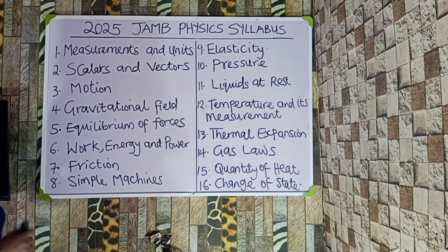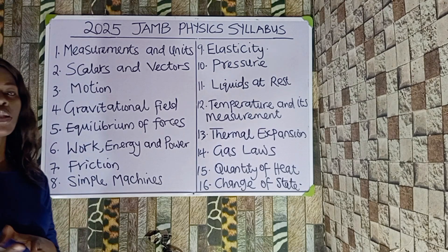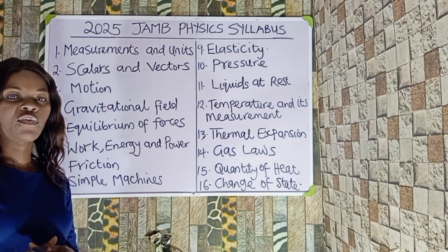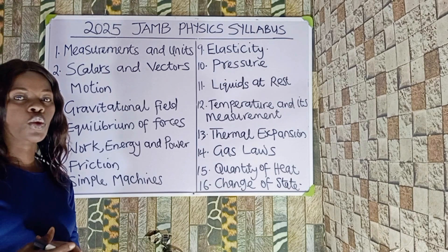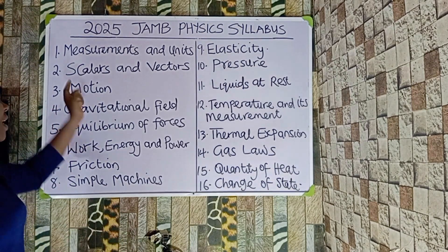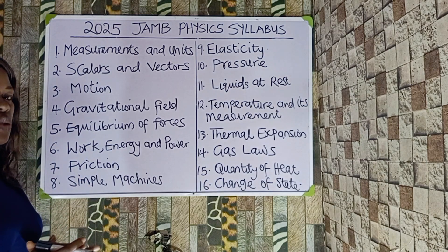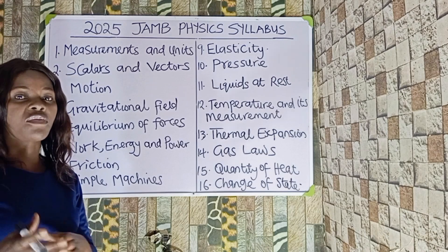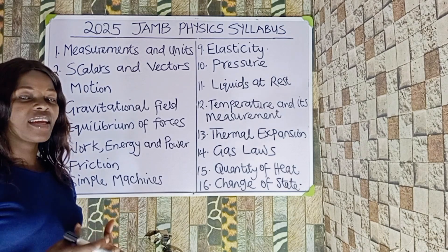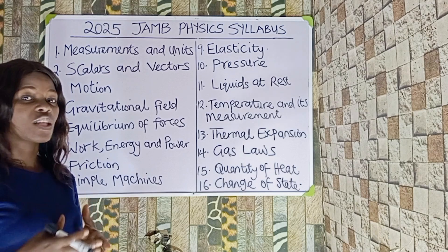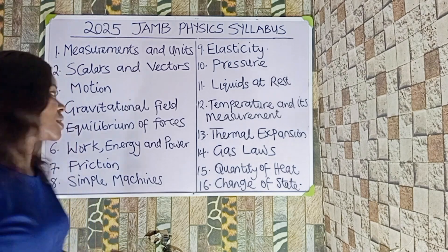Number one is measurement and units. Under measurement and units, we are expected to know what are fundamental quantities, derived quantities, dimensions of physical quantities, and more. Then we have number two, scalars and vectors. Under scalars and vectors, we should know what are scalar quantities, vector quantities, the resolution of vectors inclined in horizontal and vertical components, and the resolution of more than two vectors.